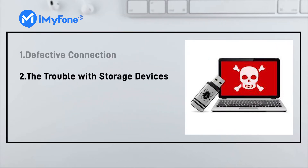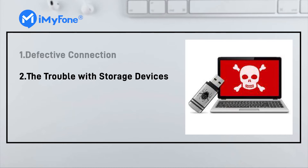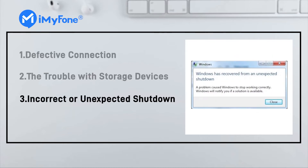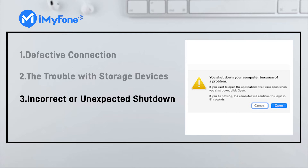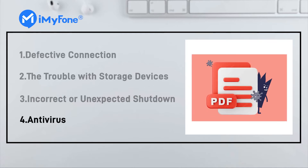Second, trouble with storage devices — you might store the PDF file on a damaged storage or USB device. Third, incorrect or unexpected shutdown — your PC might shut down unexpectedly when transmitting the PDF file. Fourth, antivirus — PDF files can be corrupted by any malware or destructive file on your PC.